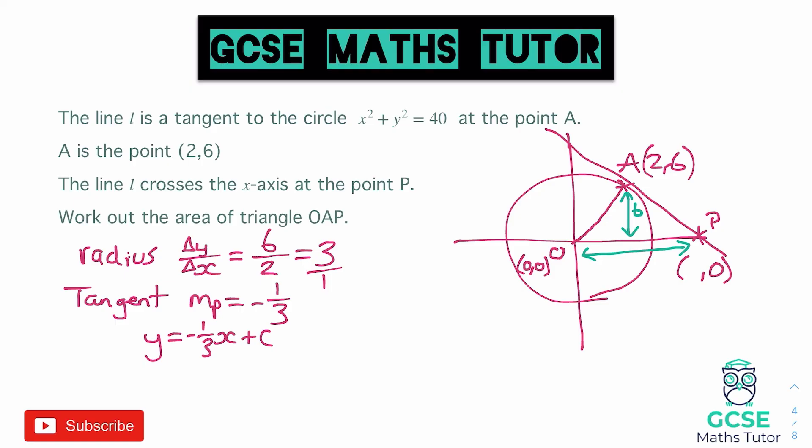To find the value of c, we'd have to substitute in a coordinate on that line. Now that's good because we know that A is on the line. So we can sub the coordinate (2,6) into our equation. So y is 6, so 6 is equal to minus a third multiplied by the x coordinate, which is 2, plus c. So we've got to do 2 times negative a third. So 6 is equal to negative two thirds plus c. So to find the value of c, we add the two thirds over. So if we add two thirds to 6, that's going to be 6 and two thirds. And, of course, we could write that as an improper fraction as well. So 6 times 3 is 18. Add the 2 is 20. So we could say that c is 20 over 3.